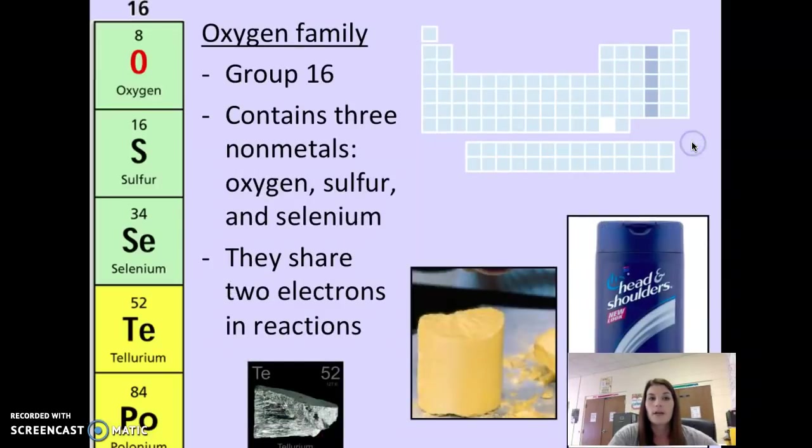The oxygen family is next. This is group 16 on the periodic table. They contain three nonmetals, which would be oxygen, sulfur, and selenium. Oxygen, we know, is in the air. We breathe it in every day. Sulfur, this is an example of sulfur right here. Sulfur is a really good example of a dull and brittle nonmetal. So it is not shiny. It is yellow. It has a terrible smell. It smells like rotten eggs.